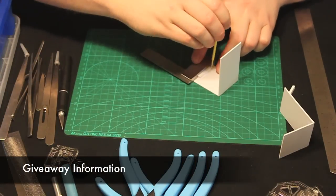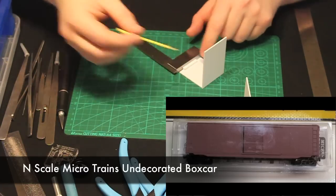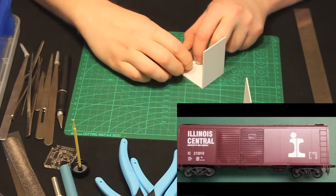Giveaway time. You can win one of two items. The first item is the N scale Microtrain's undecorated boxcar. The second item is an HO scale Illinois Central boxcar. Here's the information.